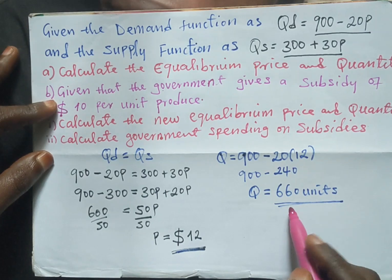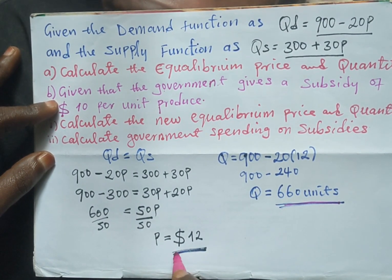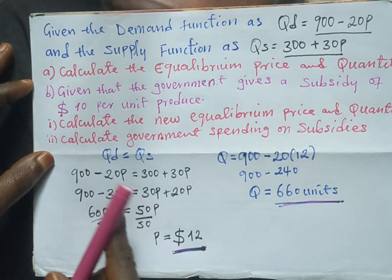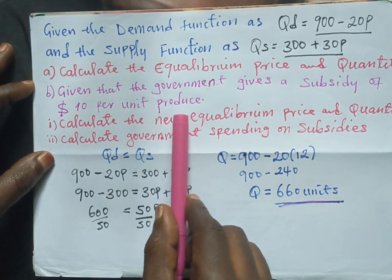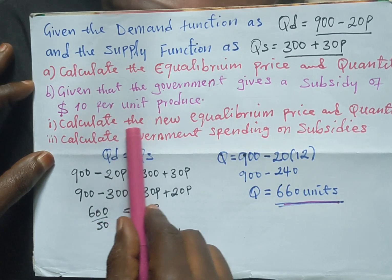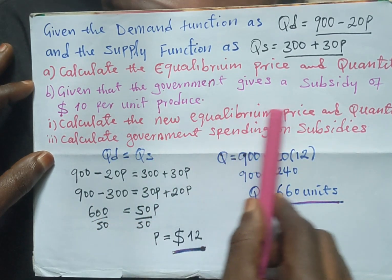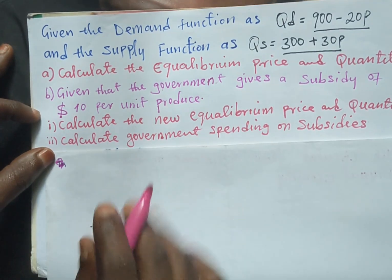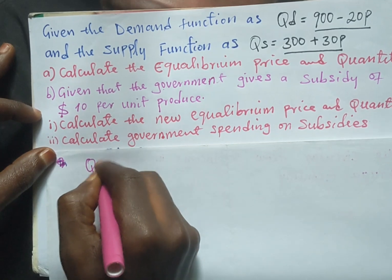So we have our equilibrium quantity as 660 units and the equilibrium price as 12 US dollars. The second part says that the government gives a subsidy of $10 per unit produced, and we are going to look for the new equilibrium price and quantity after the subsidy.